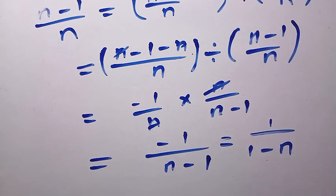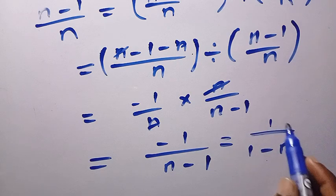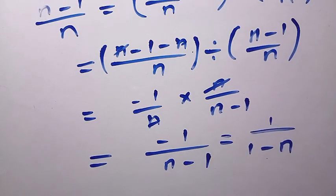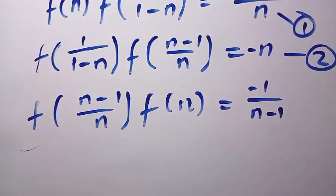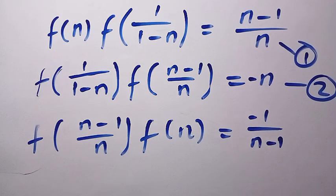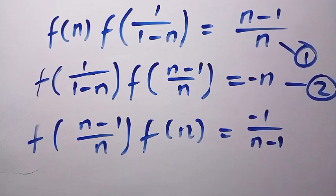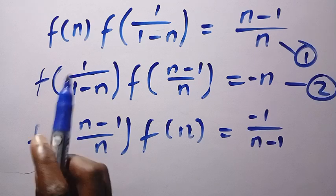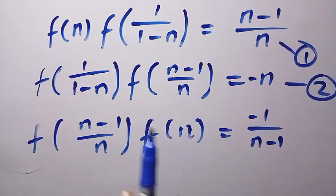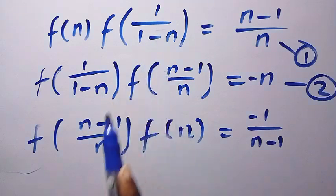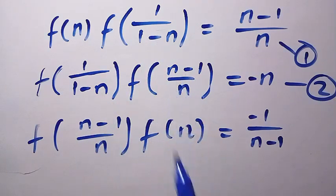So we now have a third equation. All of the right-hand side gives us 1 divided by (1 minus n). Looking at all three equations together, we notice that f(n) appears in Equation 1, f of [1/(1 minus n)] appears in both Equations 1 and 2, and f of [(n minus 1)/n] appears in both Equations 2 and 3. These three function values cycle through the arguments.